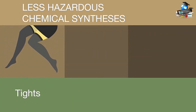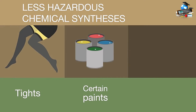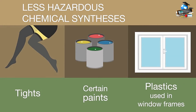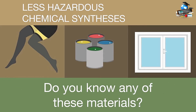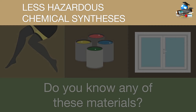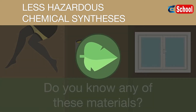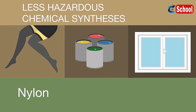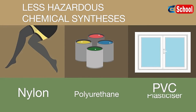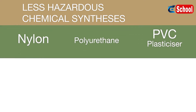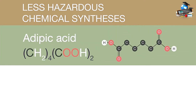The next time you look at tights, certain paints, or even plastics used in window frames, you may want to think about the raw materials from which they are made. Nylon is used for tights, polyurethane for paints and coatings, and plastic window frames are made of PVC. These contain a plasticizer, allowing the frames to be easily moulded. All of these materials require adipic acid in their production.